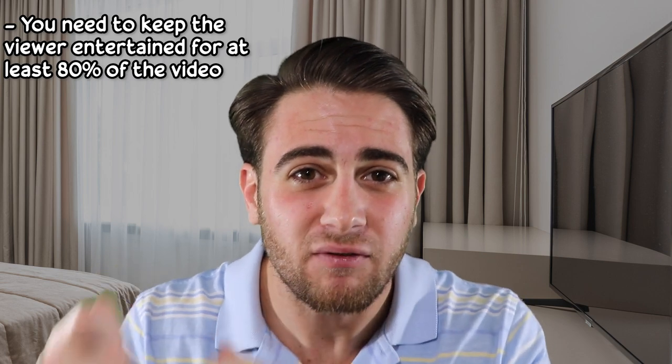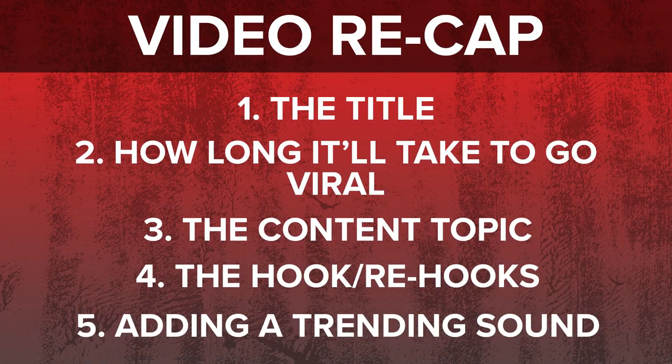To recap: if you want to go viral on YouTube Shorts, you need to consider the title of your content, how long it's actually going to take to go viral — probably not in the first 24 hours — the topic of your content, and the hook and how many times you're re-hooking the viewer. Make sure you're adding trending music into your Shorts. I just dropped a video about how the YouTube Shorts algorithm works that covers a ton of things not in this video. Click on that, or smash the subscribe button and get ready for my next YouTube Shorts video coming in just a couple of days.